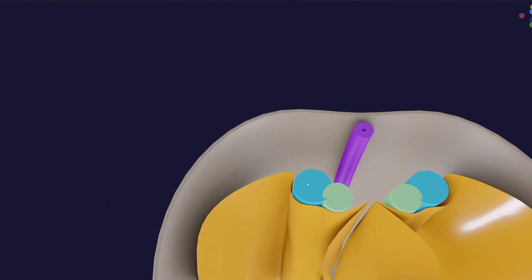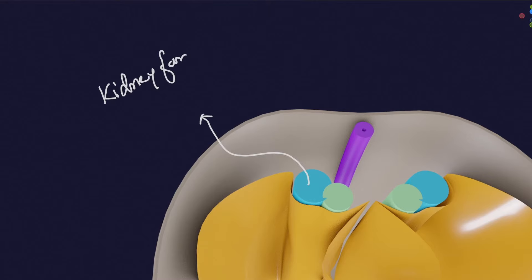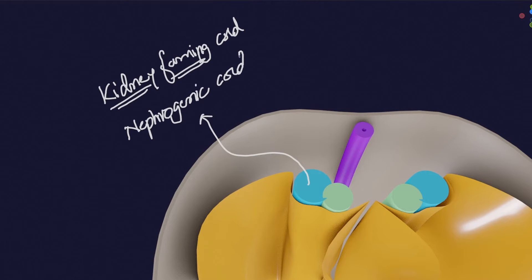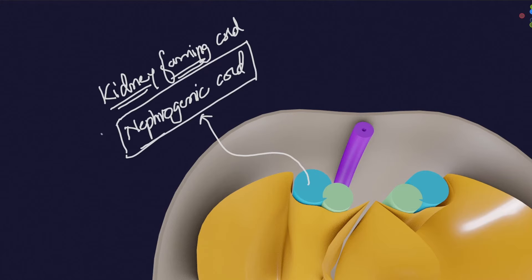The bluish one is the main component going to form the urogenital system — mainly the kidneys. So it is the kidney-forming chord. In Latin or Greek, kidney is 'nephro' and 'genic' means forming, so this is the nephrogenic chord. It is also called the nephric chord.